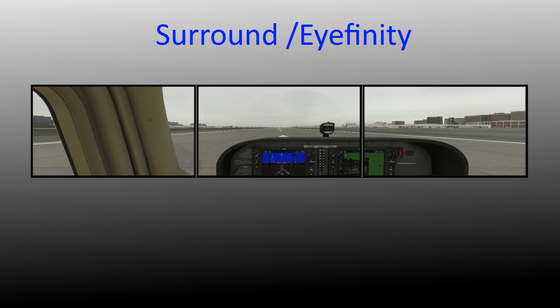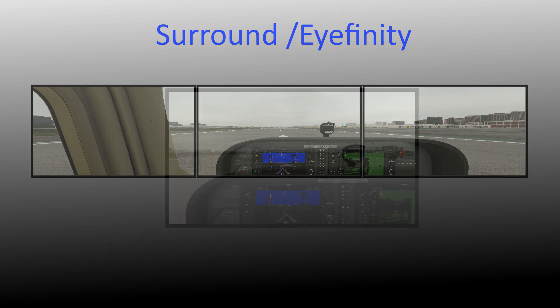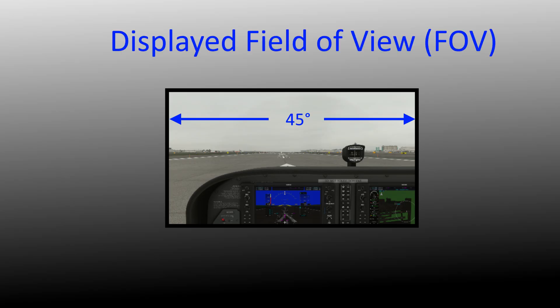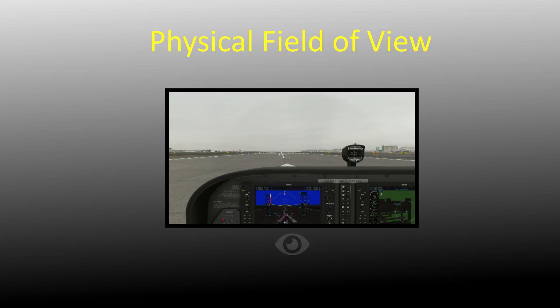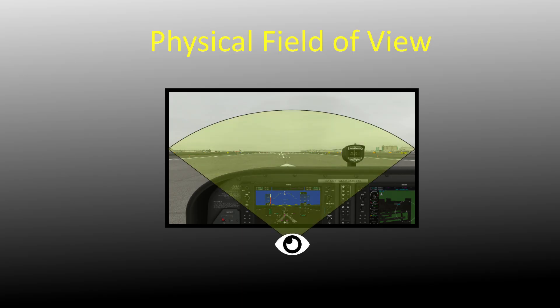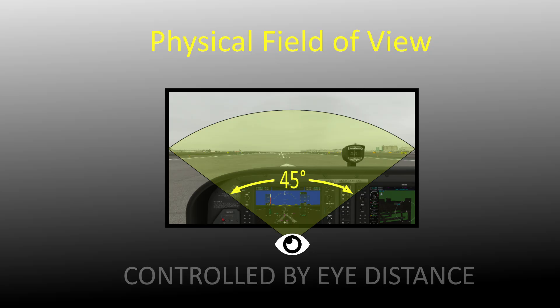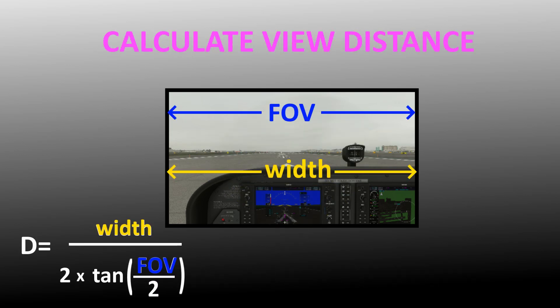So what's the problem? First, a little bit of the basics. When you run your simulator on a single monitor, the goal is to make the displayed field of view — which is set in your simulator — equal to the physical field of view perceived by your eye. When the displayed field of view and the physical field of view are the same, everything looks the correct size. Obviously, the physical field of view is controlled by your eye distance from the monitor. This ideal eye distance can be calculated with a formula.